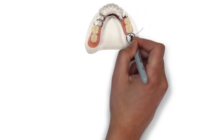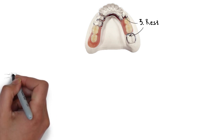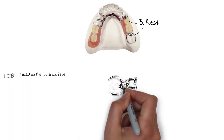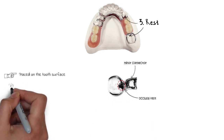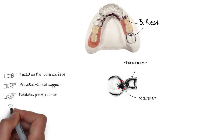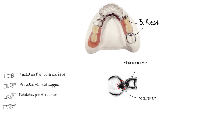The third part is the rests. A rest is basically a part of the prosthesis that is placed on a tooth surface and provides vertical support to the denture. By providing this vertical support, it maintains the components of the prosthesis in their planned positions. The rest also maintains the established occlusal relationship and directs and distributes the occlusal loads to the abutment teeth. The rest also makes up the indirect retainer, which will be discussed further.